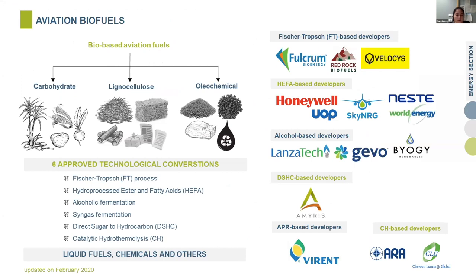Starting with the biofuels, there are six certified pathways as shown on your left-hand side. They can be produced from different types of feedstock — carbohydrate, lignocellulosics, or oleochemical waste. The producers can be seen on the right-hand side. The maximum allowable blending ratio is 50% by volume with conventional kerosene.